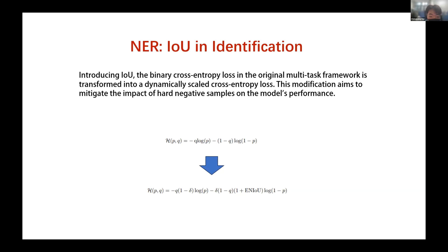The binary cross-entropy loss then becomes a dynamic loss that contracts or expands based on IOU. Since IOU dynamically changes with the current span and text embedding, we add a negative sign before the IOU value — meaning the higher the overlap, the lower the span's score. For ordinary negative samples with no overlap, the standard cross-entropy approach is used. This is how introducing IOU into entity recognition enhances our loss function.